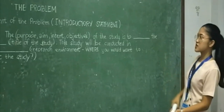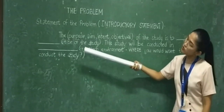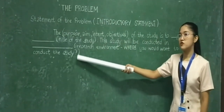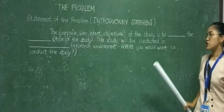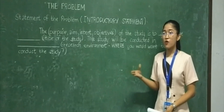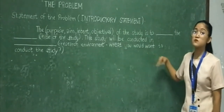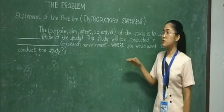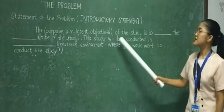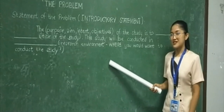After that, 'the purpose of the study is to [verb] [title of the study].' You will write the title of your study here. Then: 'This study will be conducted in [blank].' In this blank, you will place the research environment where you want to conduct the study — whether a school or any specific place. For example: 'This study will be conducted in Zakuya School, Asian Learning Center, Lapu-Lapu City.'